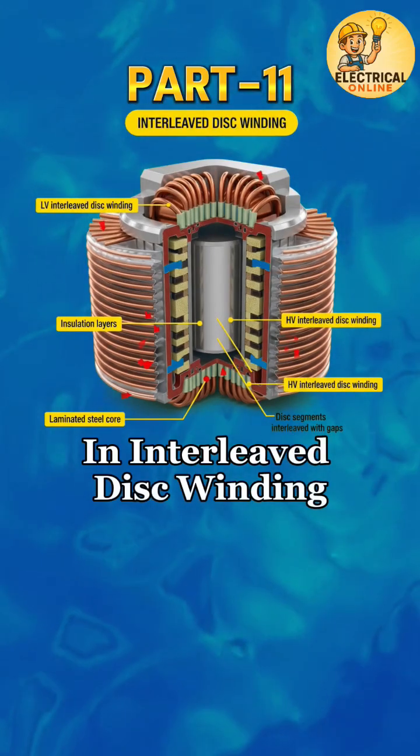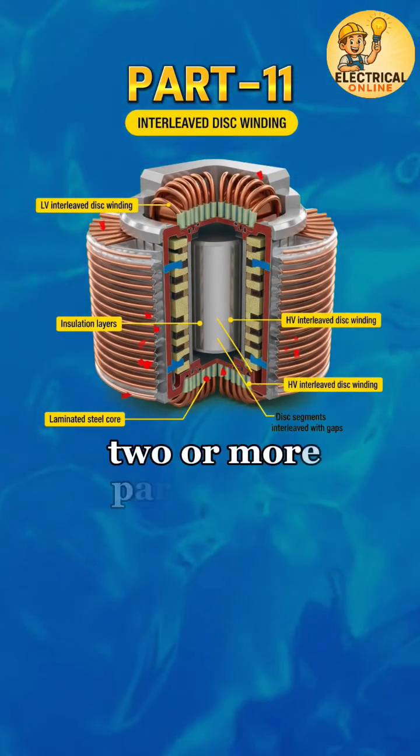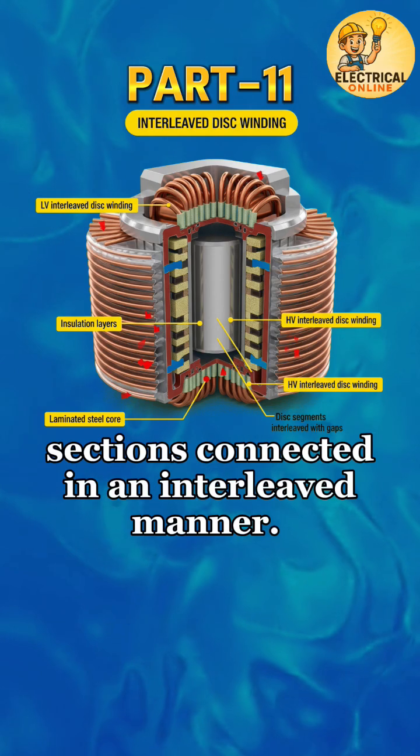In interleaved disk winding, each disk is divided into two or more parallel coil sections connected in an interleaved manner.